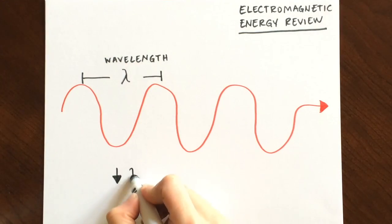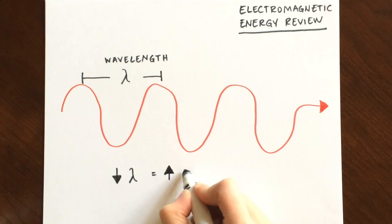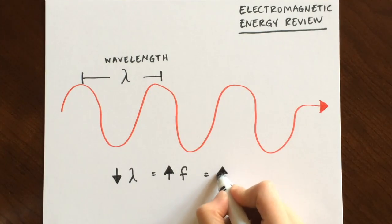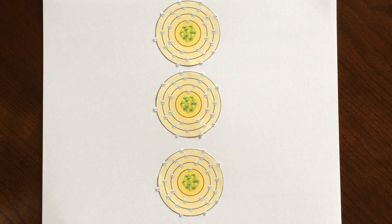In other words, decreasing the wavelength increases the frequency and increases the energy. X-rays have very short wavelengths ranging from 10 to the negative 8 to negative 9 meters.